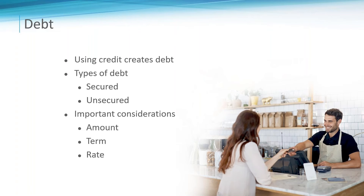Longer loan terms result in higher total interest payments over the life of the loan. Does that fit into your budget? Interest rate is also critical. In March of last year I refinanced my house at 2.25% on a 15-year mortgage, and that rate is now over 5.25% — a major factor in what that monthly payment looks like. Make sure you understand whether your rate is adjustable or fixed and know all the details before committing.